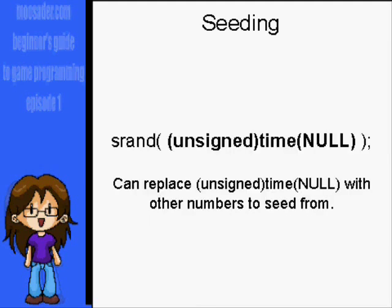Here's how you would seed to the time. You use the srand function, and use unsigned time with the null argument.